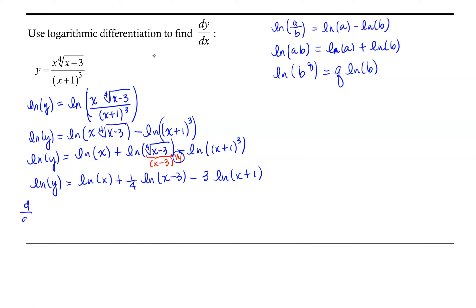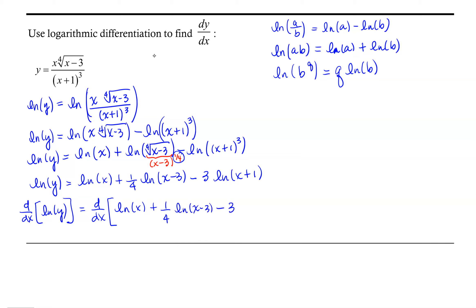We take the derivative with respect to x of the natural log of y on the left, and then the derivative with respect to x on the right-hand side: natural log of x plus one-fourth times the natural log of x minus 3, minus 3 times the natural log of x plus 1.